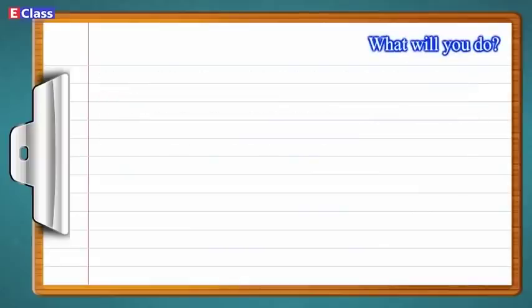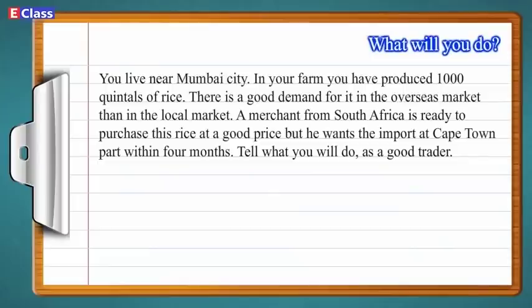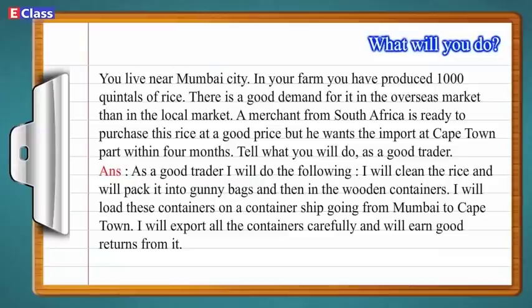What will you do? You live near Mumbai city. In your farm, you have produced 1000 quintals of rice. There is good demand for it in the overseas market. A merchant from South Africa is ready to purchase this rice at a good price, but he wants the import at Cape Town port within 4 months. As a good trader, I will clean the rice and pack it into gunny bags and then into wooden containers. I will load these containers on a container ship going from Mumbai to Cape Town and export all the containers carefully to earn good returns.